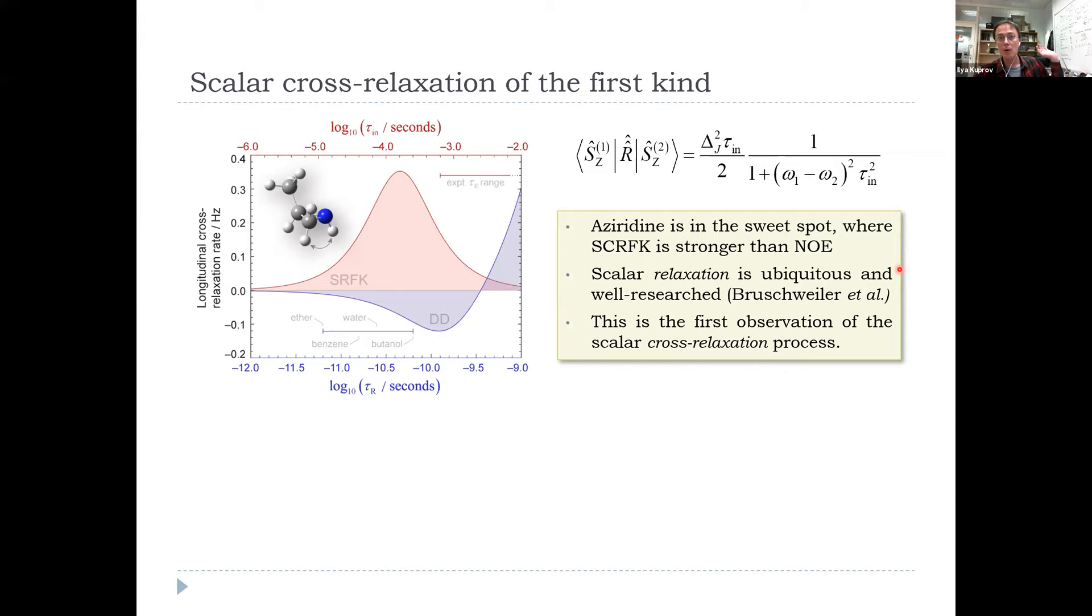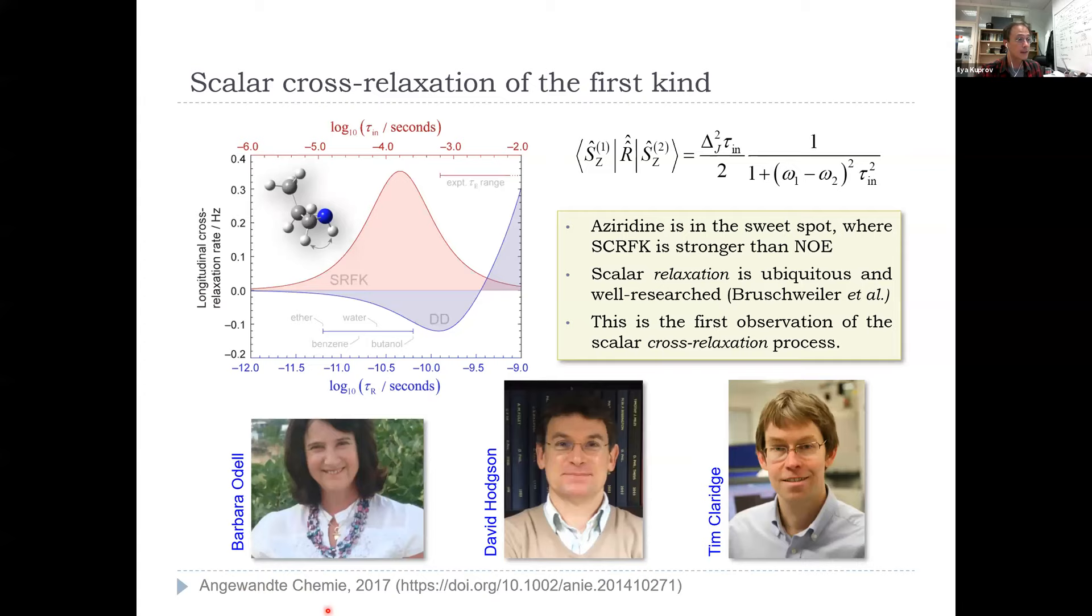Scalar relaxation is ubiquitous. Everybody has seen it in both NMR and EPR, but the scalar cross-relaxation is extremely rare. That's the only off-diagonal element there is in there. So we published that in Angewandte, Tim, David Hodgson, the synthetic organic chemist who made the substance, and Tim and Barbara noticed it. Then the theory part and the simulation part was mine. That's the first story of things that you can realistically just bump into.